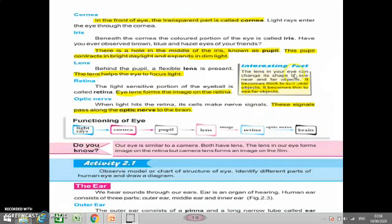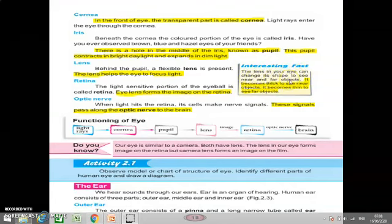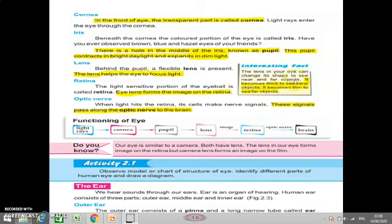The lens in your eye can change its shape to see near and far objects. The lens of our eye changes its shape slightly when seeing near and far objects. It becomes thick to see near objects. To see near objects it becomes thin to see far objects. When seeing far objects it becomes thin, meaning it spreads a little.